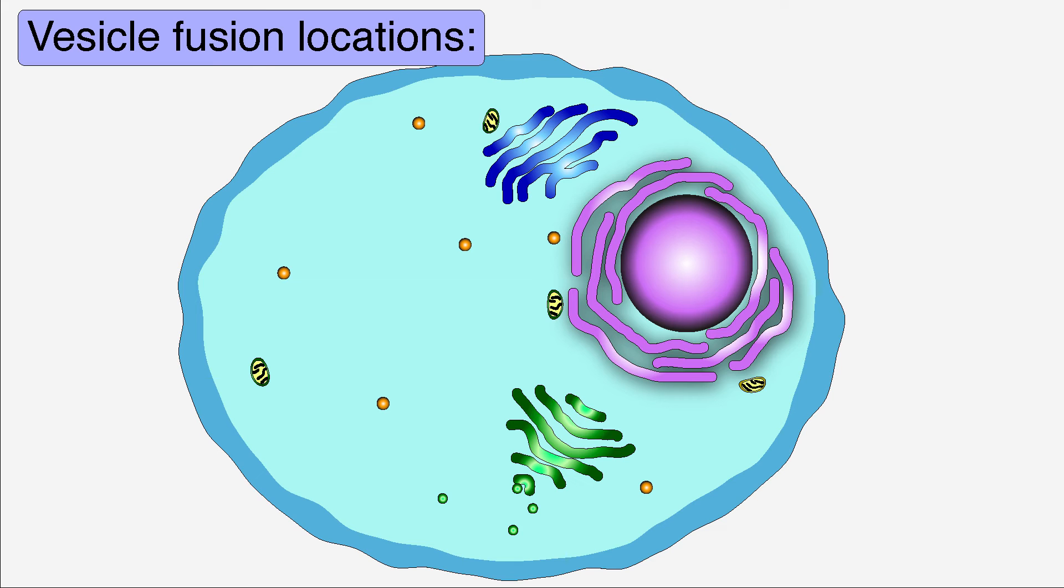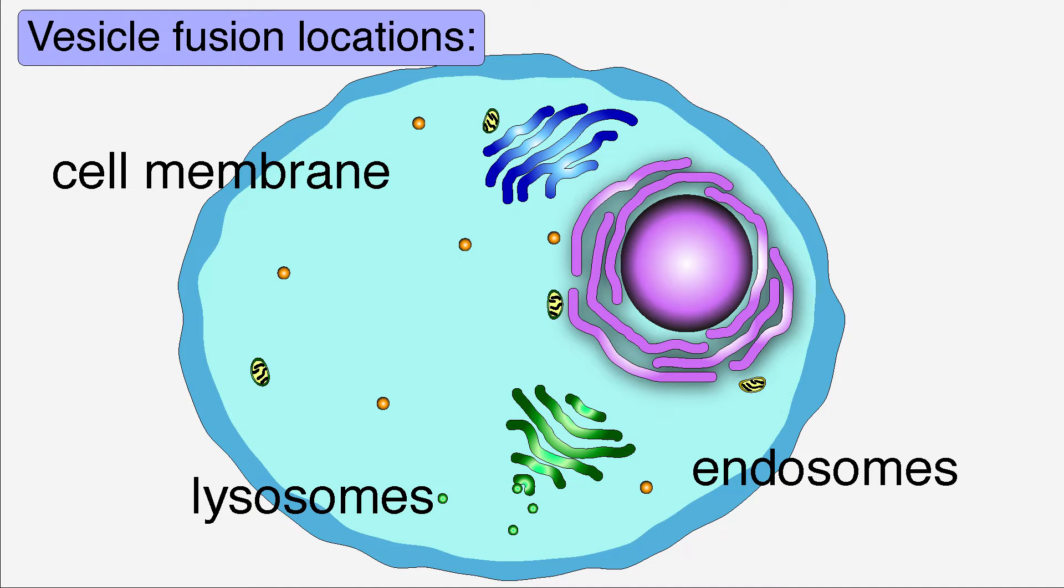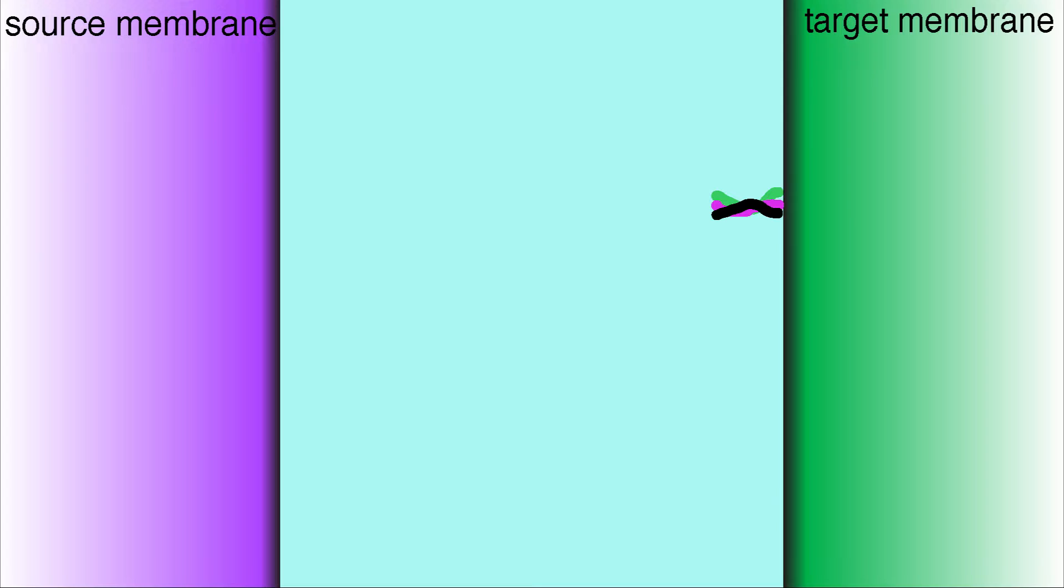Proteins destined for many locations in the cell, such as the cell membrane, endosomes, lysosomes, or outside the cell, must be transported through vesicles. If you saw our video on vesicle budding, you know that vesicles carry cargo proteins from a source membrane to a target membrane.